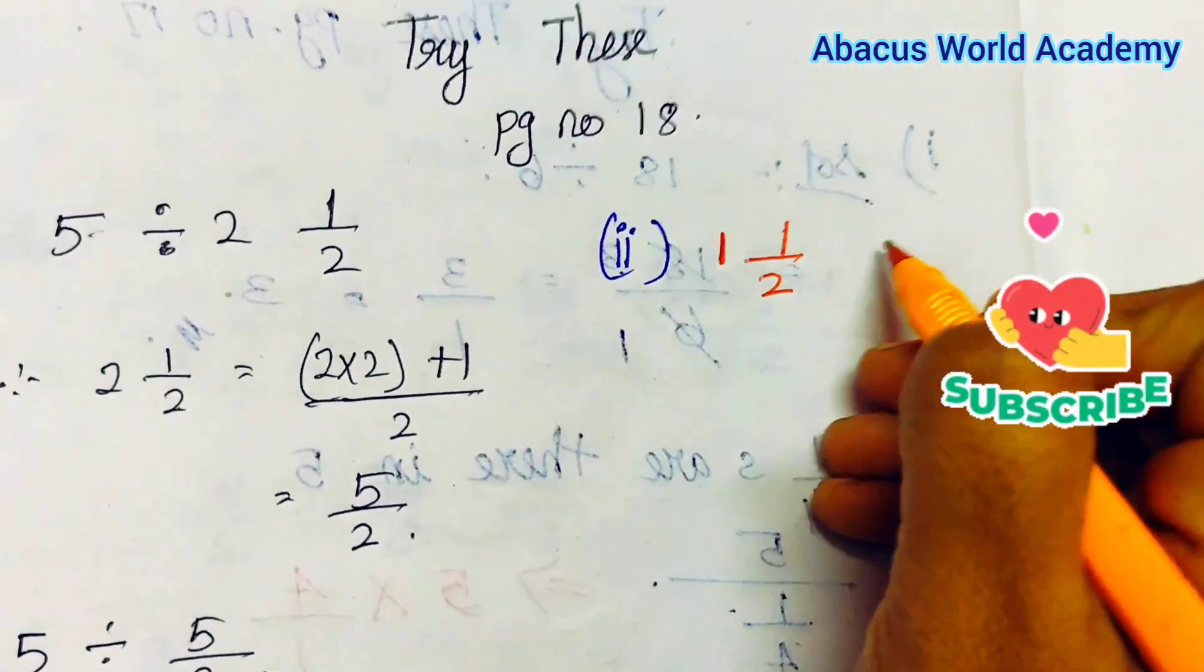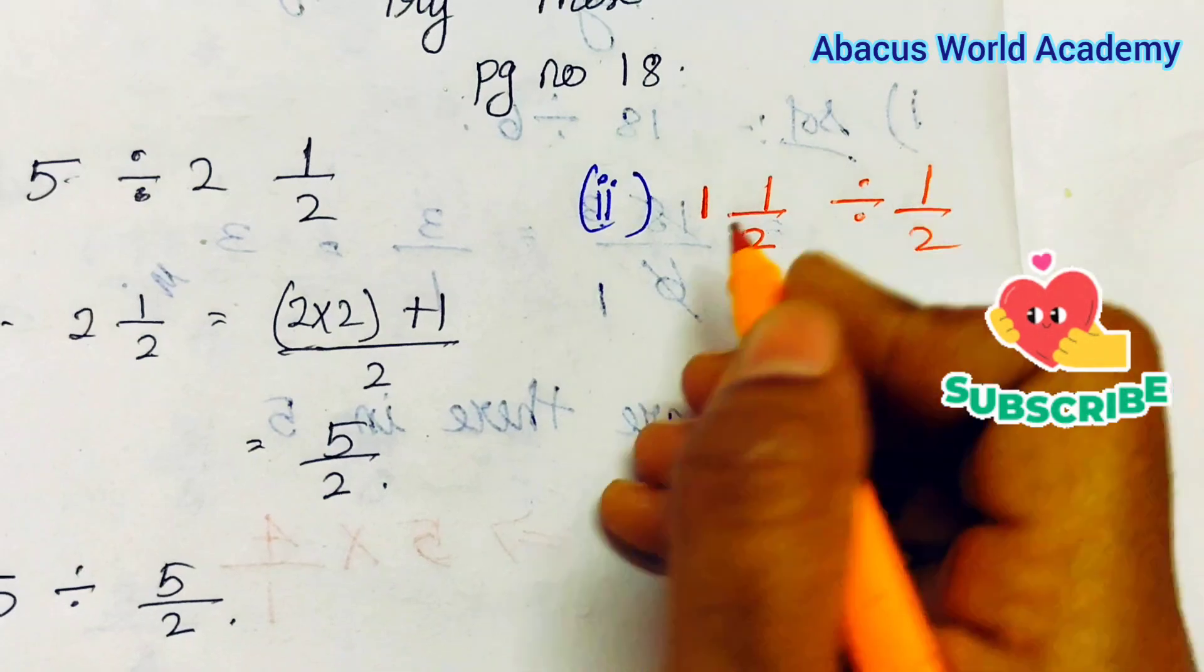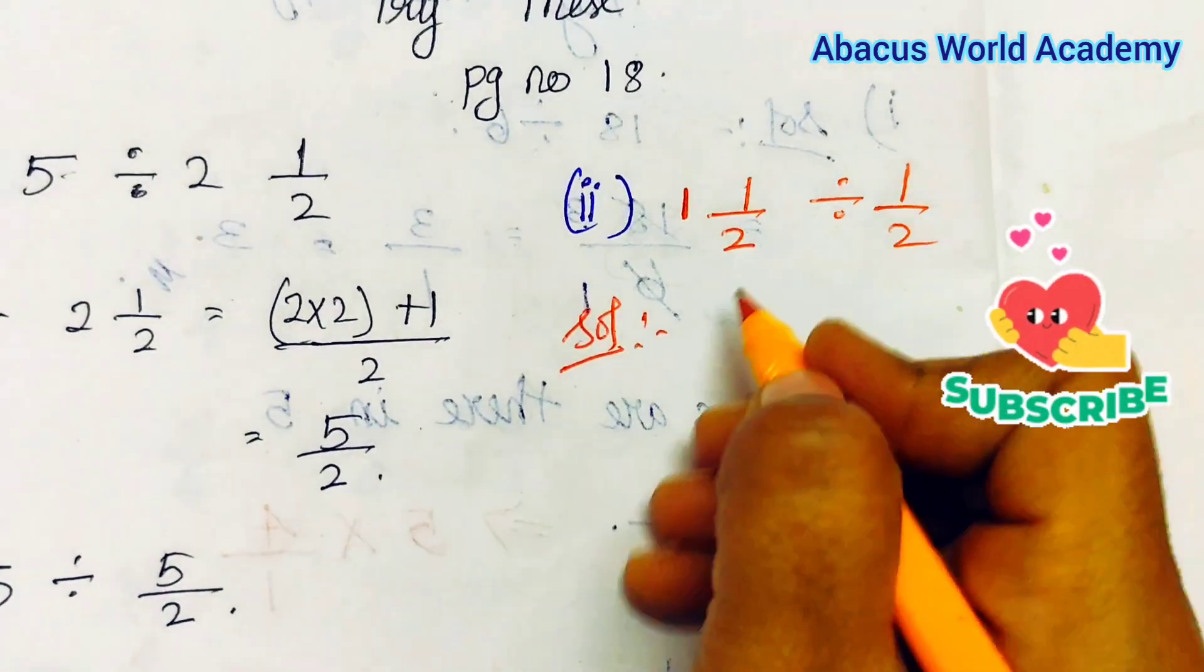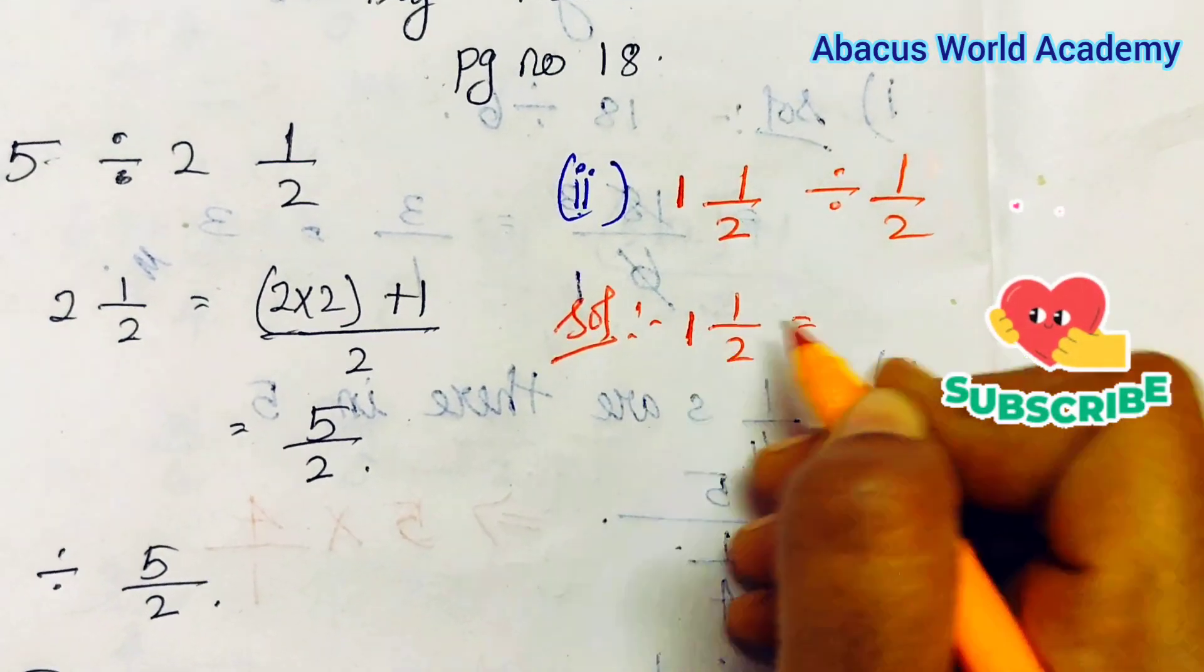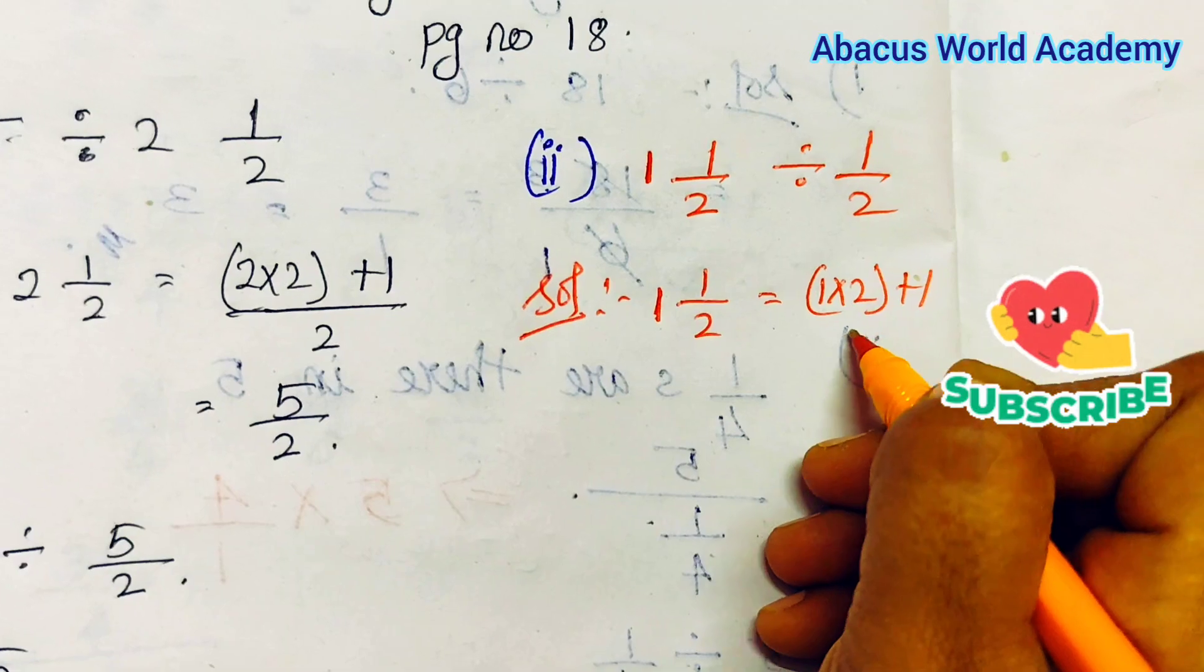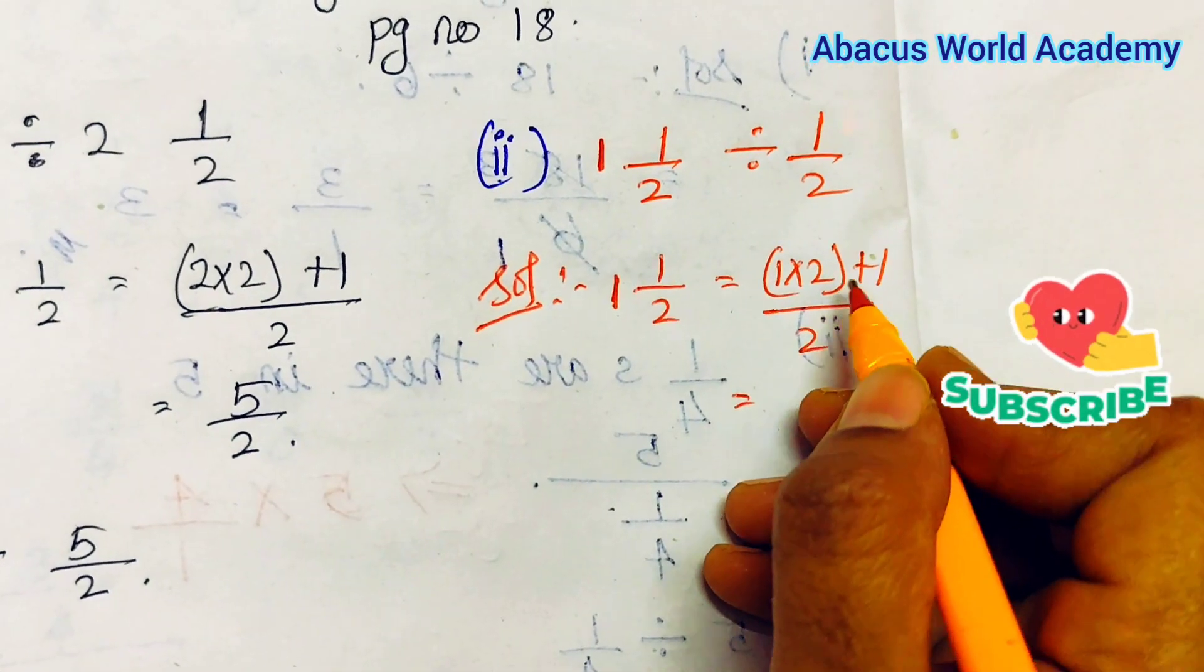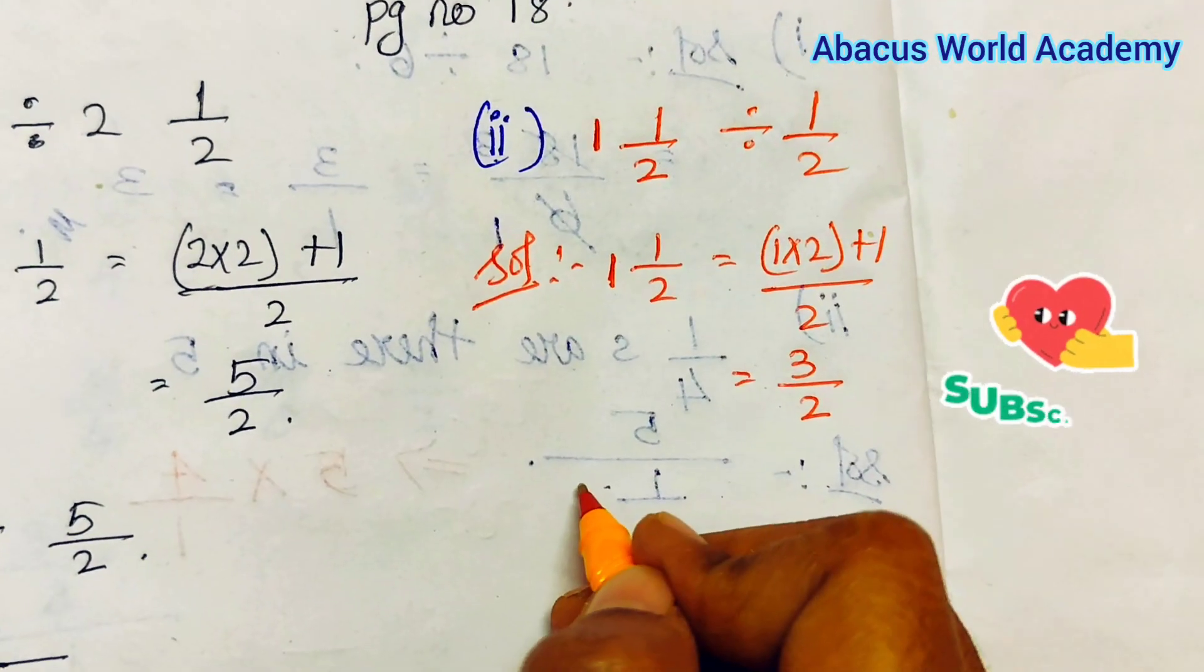Second one: Simplify 1 and 1/2 divided by 1/2. So this is the answer. 1 and 1/2 is equal to 1 into 2, 1 into 2 plus 1 by 2, is equal to 1 into 2 plus 1, 3 by 2. Okay, so now convert.